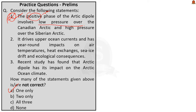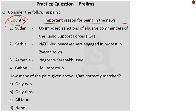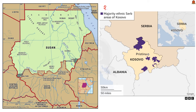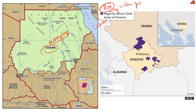The next question matches countries to reasons they were in the news. The correct answer is Option C — all four pairs are correctly matched. Sudan was in the news for the imposition of U.S. sanctions on two individuals belonging to a paramilitary group named the Rapid Support Force (RSF). Sudan is currently under a military coup; the U.S. and Saudi Arabia brokered a ceasefire between the civilian government and the RSF, but airstrikes killed around 18 civilians, resulting in the U.S. announcing sanctions on two RSF leaders.